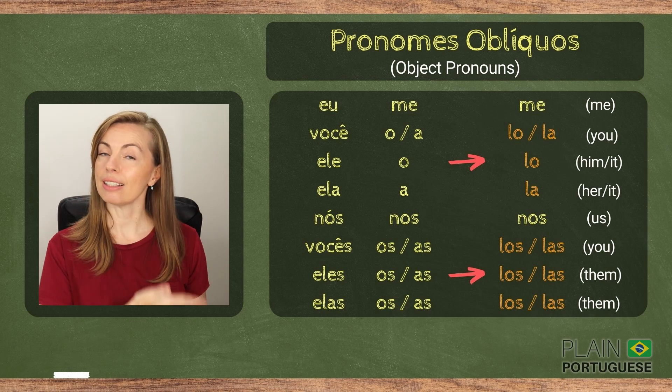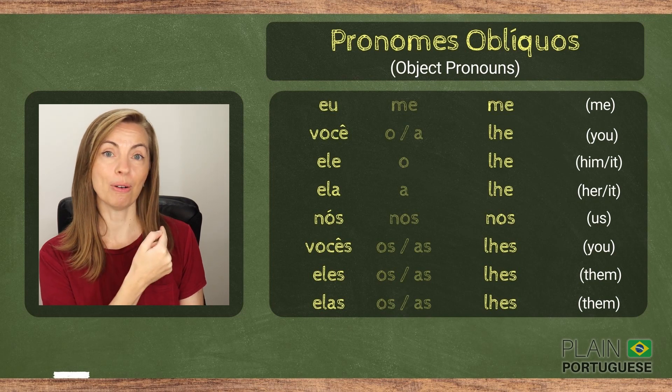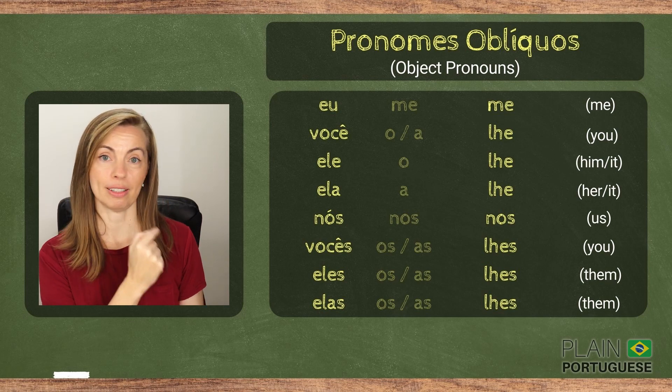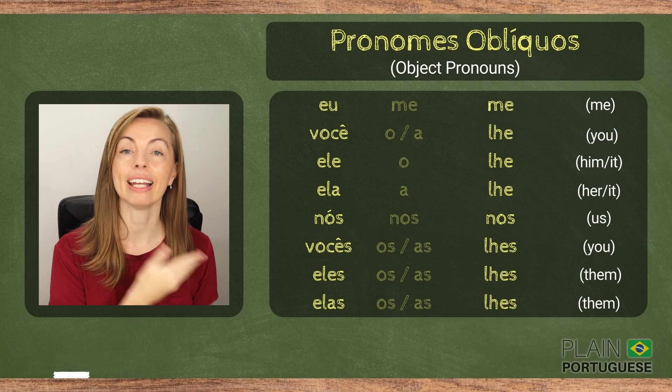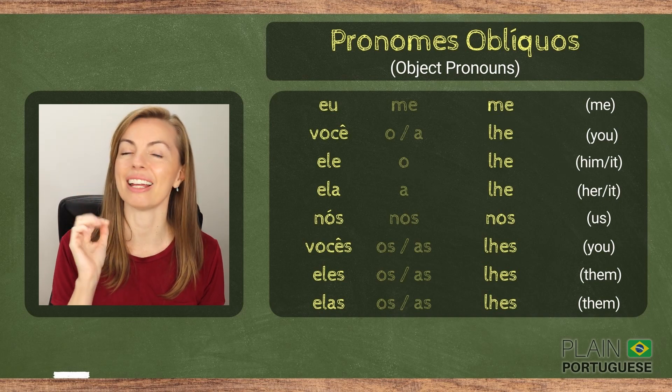Anyway, besides these pronouns, Portuguese has other ones to be used when a verb requires or is associated with the preposition A or PARA. These are the pronouns you will be learning today. Let's meet them first and then move on to our practice. So: EU → ME, VOCÊ → LHE. It is not LE. Let's work a little on the pronunciation — it is LHE.